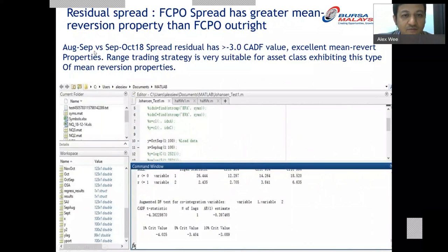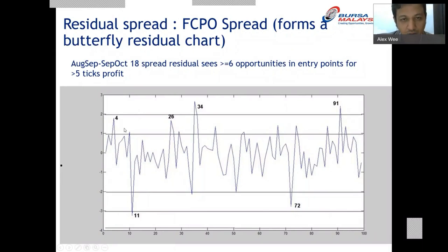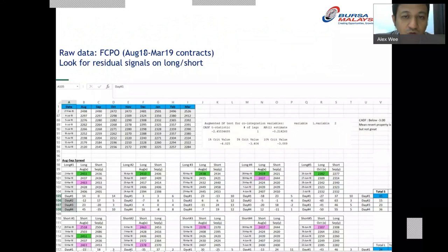You can also apply this to butterfly spreads — near-month spread versus far-month spread. With a CADF value of around -4.36, the butterfly is well co-integrated. When the butterfly residue crosses below the threshold, go long the near-month spread and short the far-month spread. When it goes above, do the reverse: short near-month spread, long far-month spread.